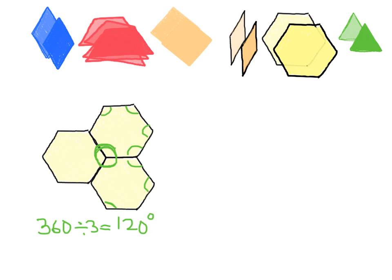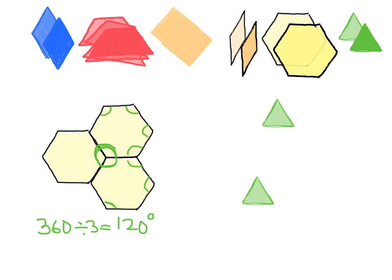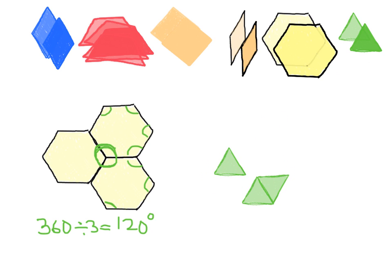Now let's try that again with a different angle. Let's take this triangle. We've got a triangle and we don't know what the measure of each of these little angles are, but they're all the same — all three of them are the same — and we know that they're acute. That's all we know so far. So let's put some of these triangles together.